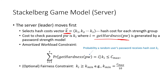The server can't pick an arbitrary cost vector — it must satisfy an amortized workload constraint: the average workload to hash a random user's password must be at most Cmax. This is computed as the sum over groups of the probability a user's password falls in group i times ki. An optional fairness constraint requires that for every group, the hashing cost is at least kmin — for example, Cmax divided by 10 — ensuring a minimum level of protection for all passwords.